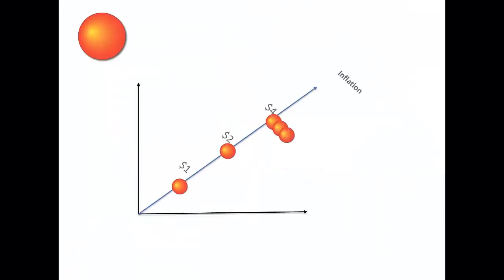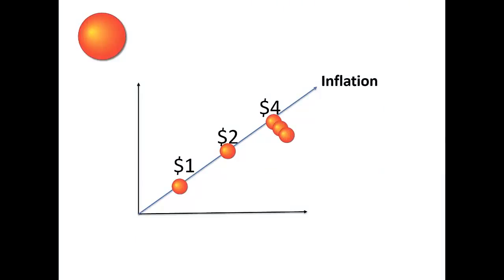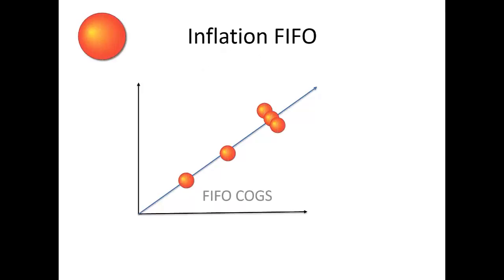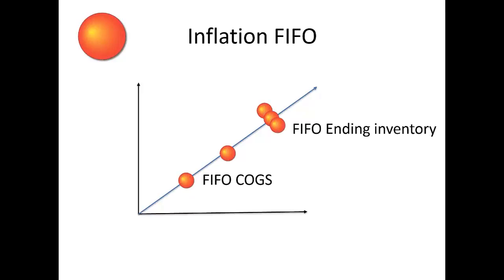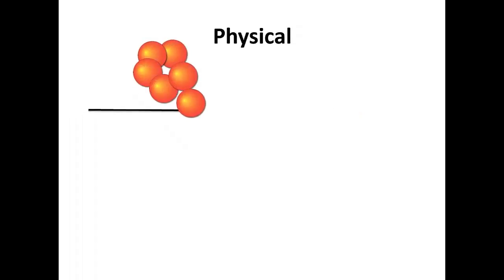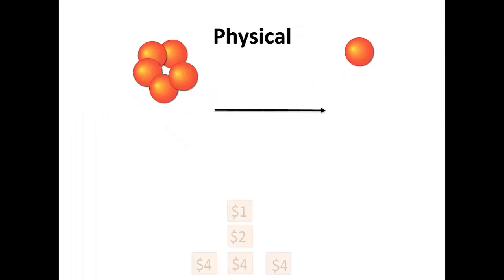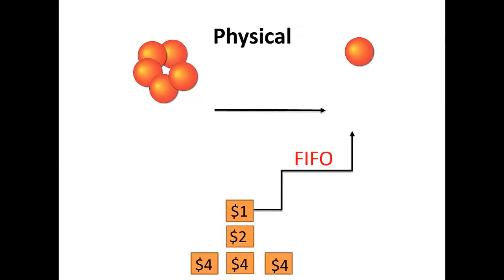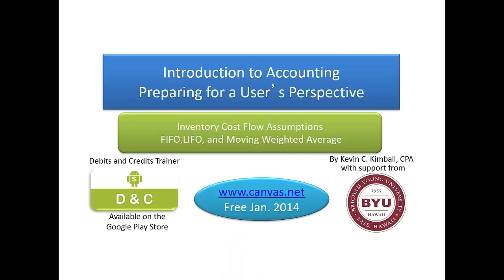You should notice that in this example prices were rising, indicating an inflationary environment. In inflationary environments, FIFO will result in the highest gross margins and the lowest ending inventory. In all cases, the physical movement of goods and purchases was exactly the same – it is simply the cost flow assumption used that changes the results reported on the income statement and the balance sheet. Get ready for the inflation and deflation videos coming up.